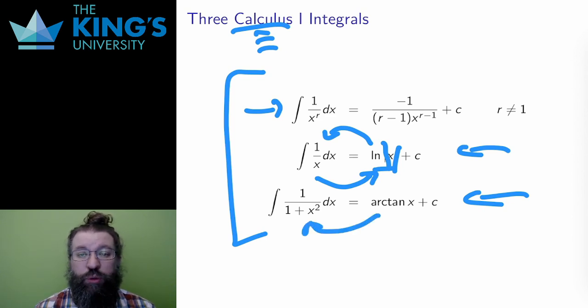And likewise, since the derivative of the arctangent function was 1 over 1 plus x squared, the integral of 1 over 1 plus x squared is the arctangent function.